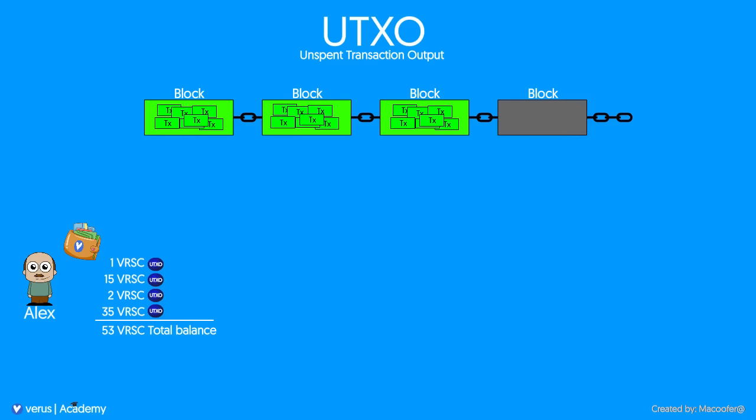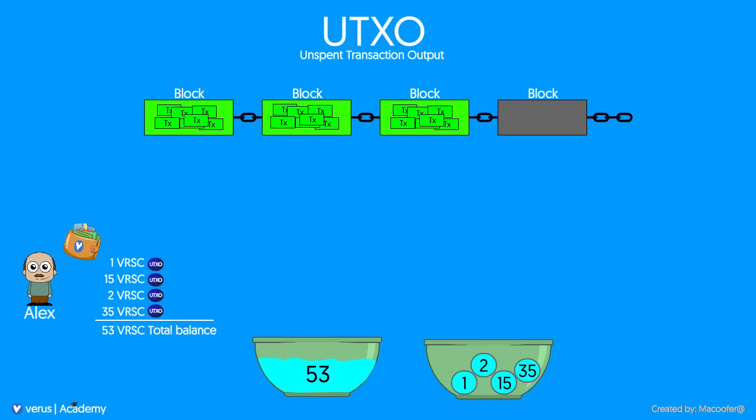Let's use two balls to explain. The first one shows the total amount of coins in your wallet, pictured as water in a ball. The second one shows four water capsules in that ball, each holding their own amount. They don't mix in the second ball.